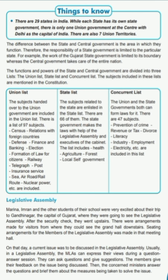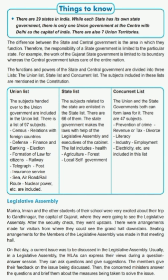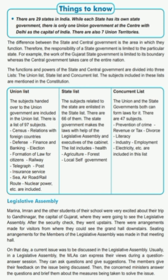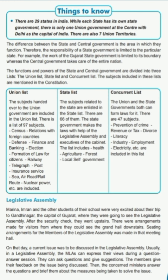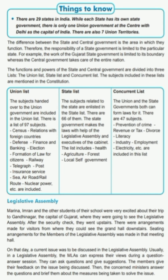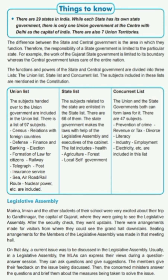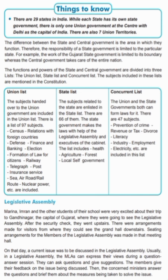The functions and powers of the State and Central Government are divided into three lists, whose subjects are mentioned in the Constitution. First is the Union List — there are 97 subjects based on which the Union Government frames laws. Second is the State List — there are 66 subjects based on which the State Government frames laws. Third is the Combined or Concurrent List — there are 47 subjects based on which both the State Government and the Union Government frame laws.